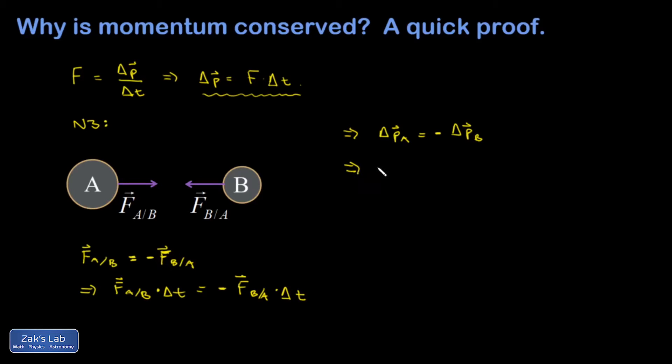And I can start just rearranging things. And I have that the change in A's momentum added to the change in B's momentum must be equal to zero. In other words, the total change in momentum for this system is equal to zero.